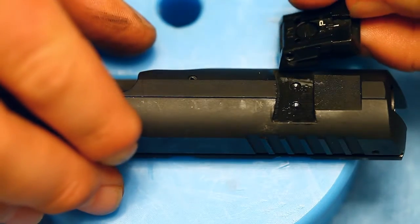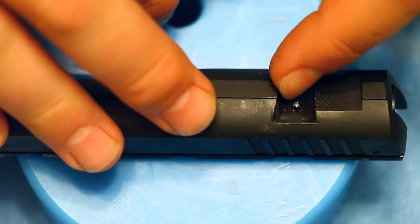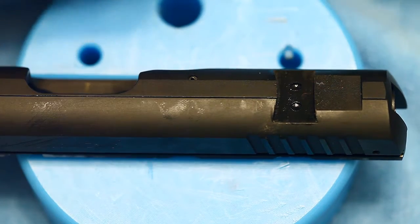As you can see, we drifted our rear sight out. Now the set screws are up inside there, and you can see the two divots for where the set screws go in.